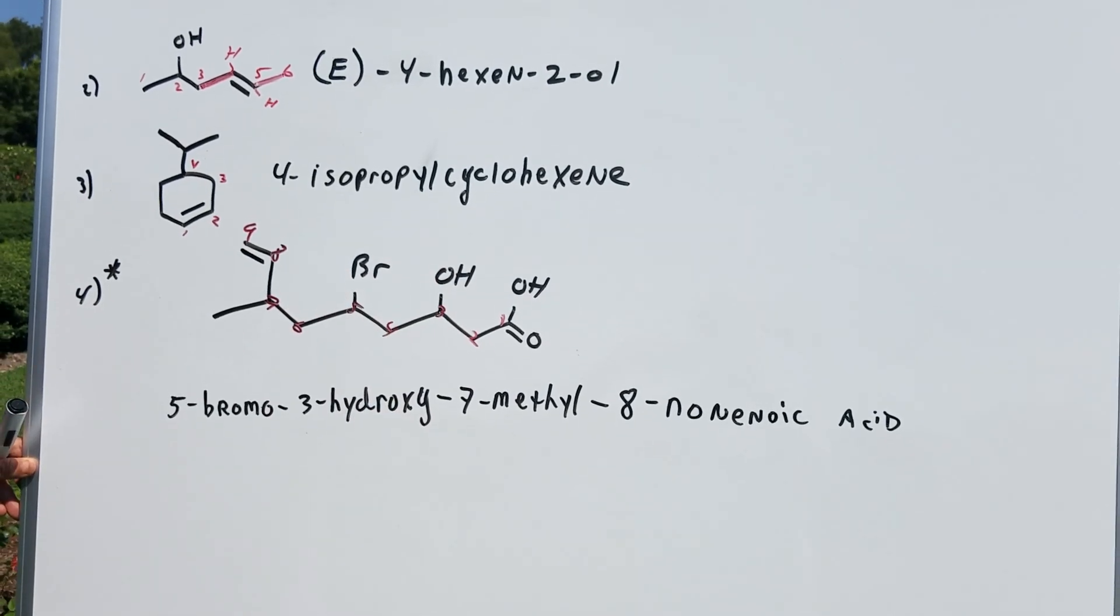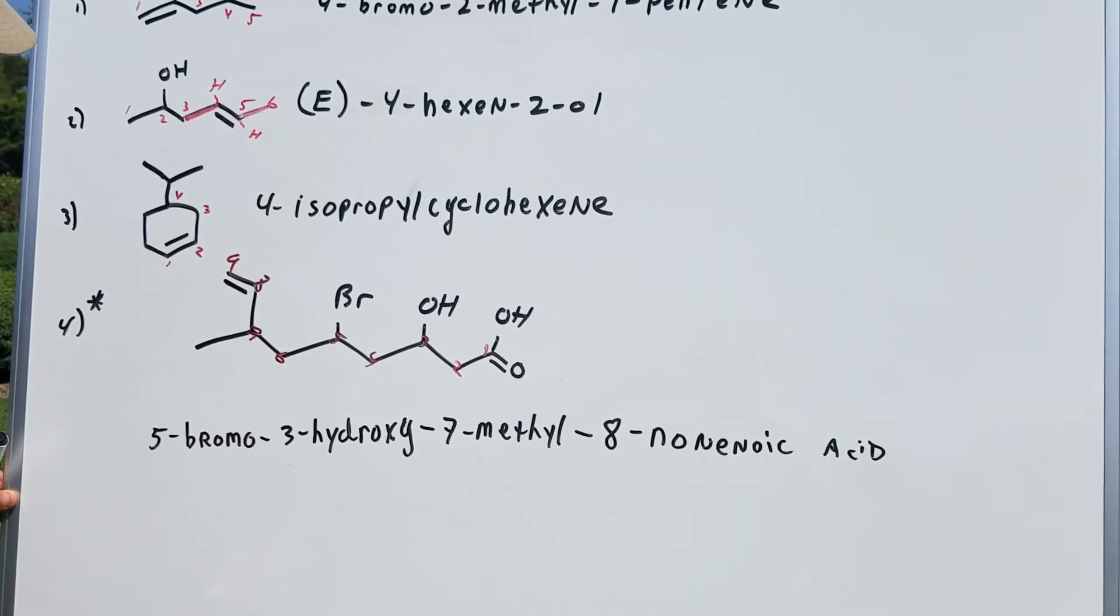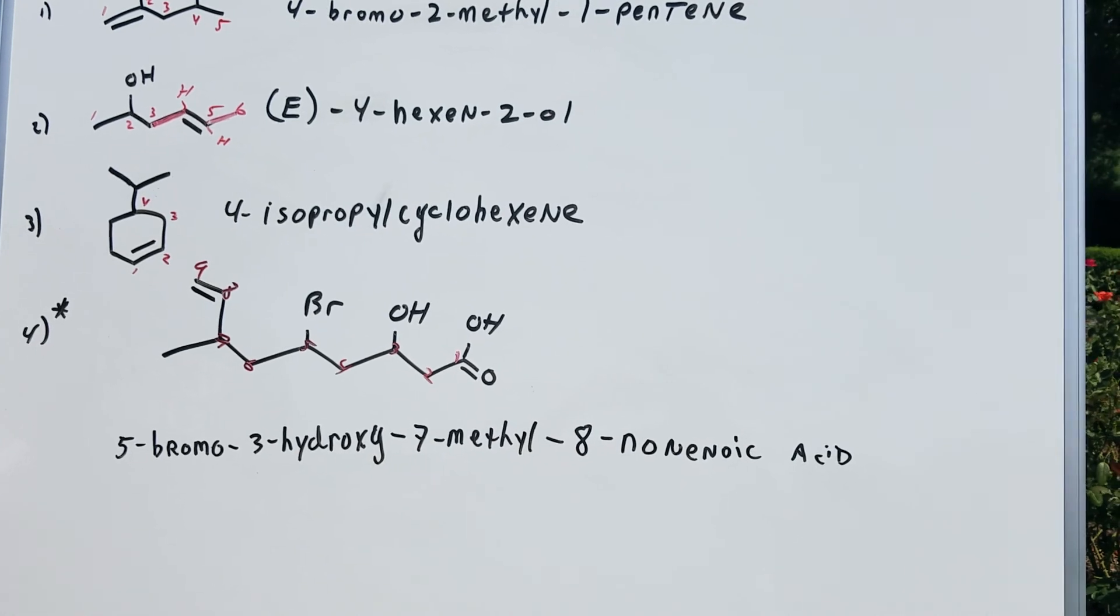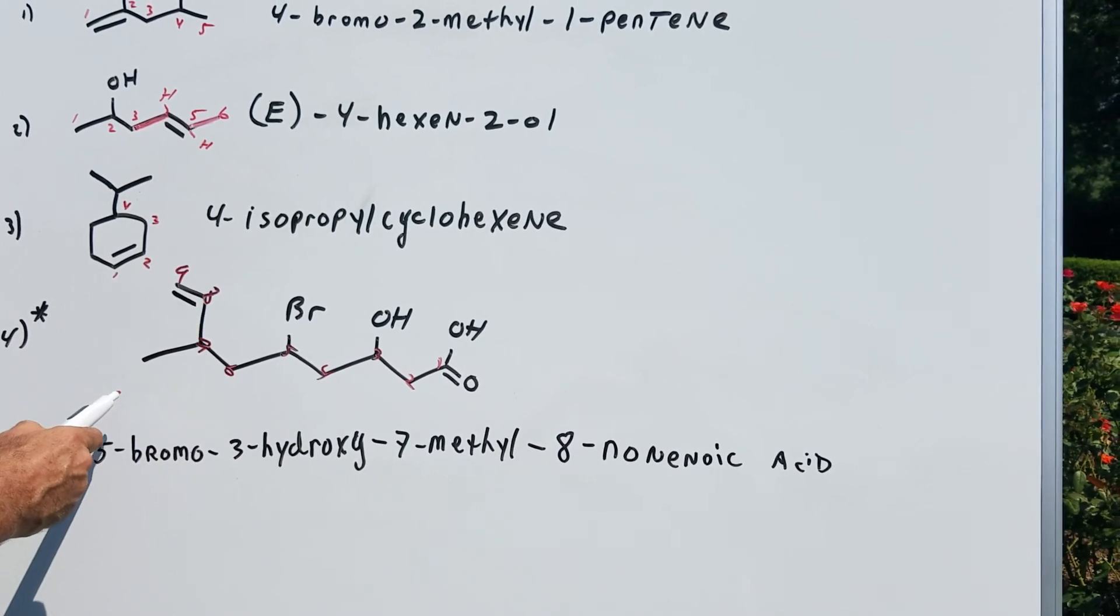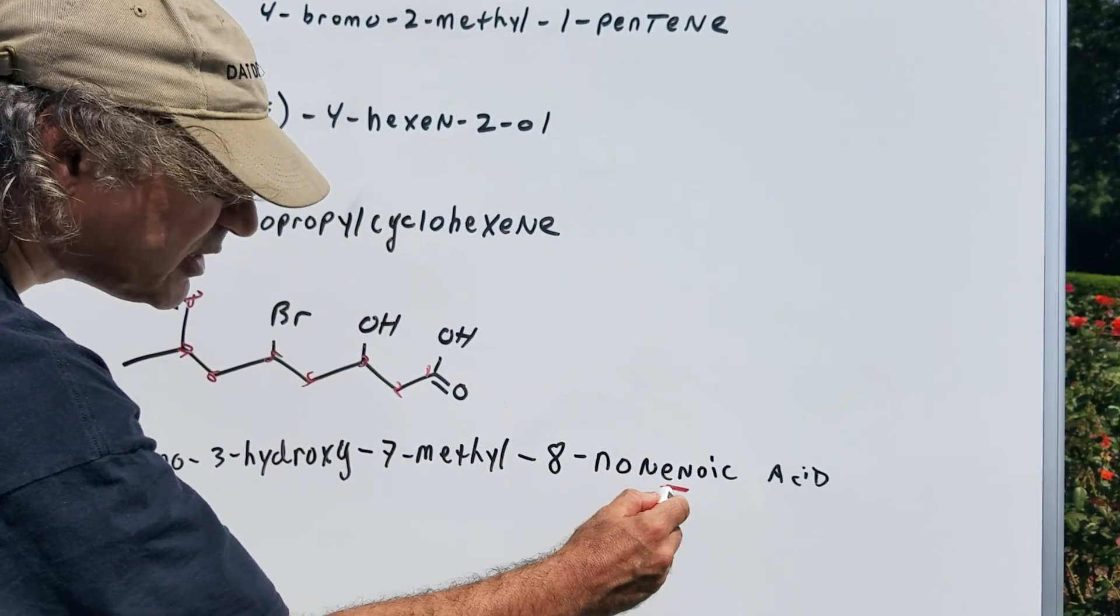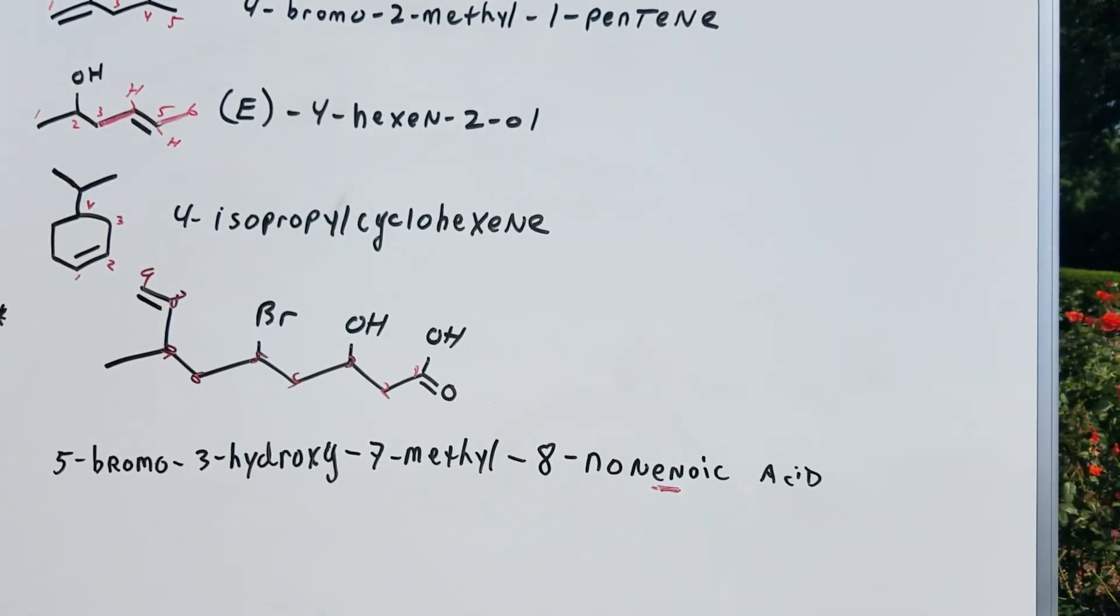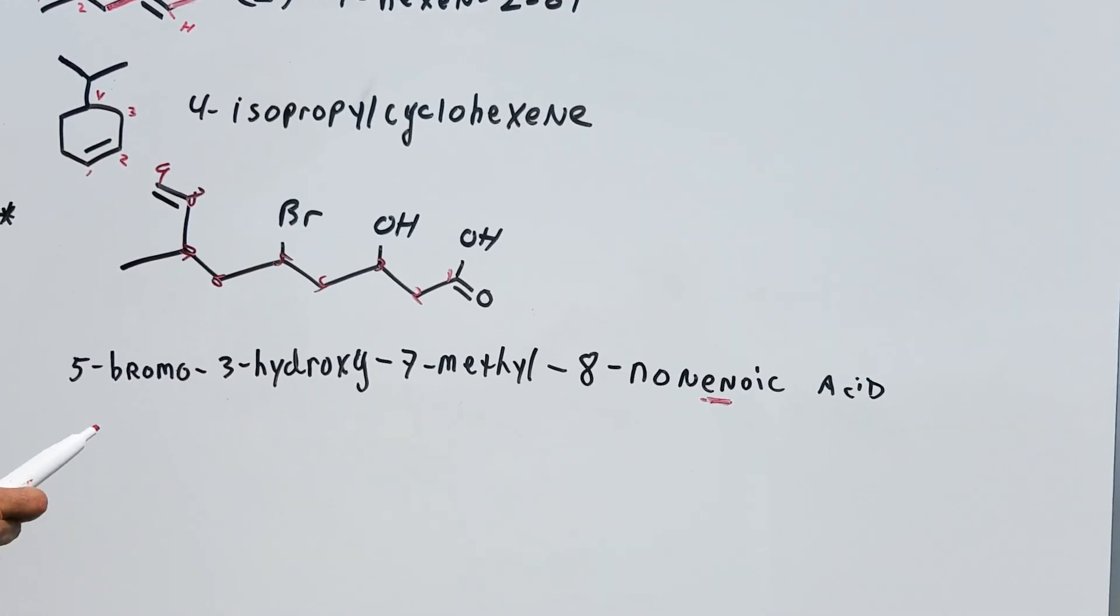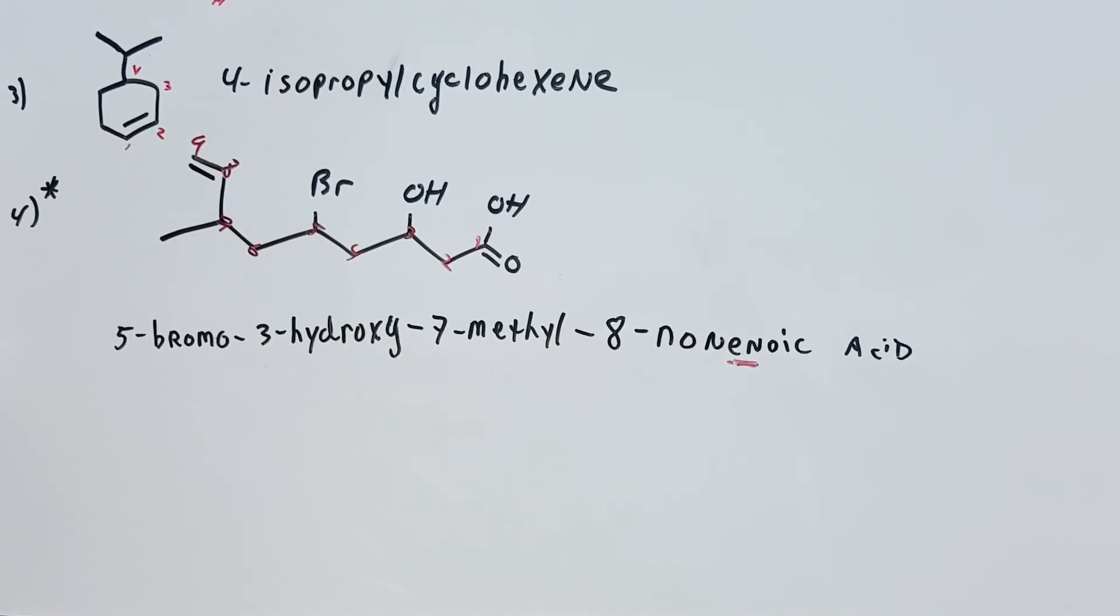off of three, there's a hydroxy. Off of five, there's a bromo. And off of seven, there's a methyl. So we're going to go in alphabetical order now. It's five bromo, three hydroxy, seven methyl, eight. It's a double bond. It's at eight. Nonine. Notice because it's an alkene. Nonine oic acid. Yeah, it's a mouthful. One more time. This is five bromo, three hydroxy, seven methyl, eight. Nonine oic acid. Now,